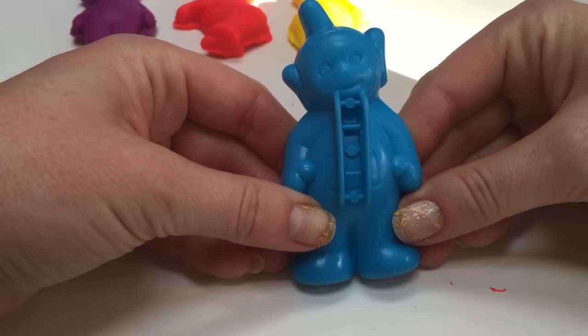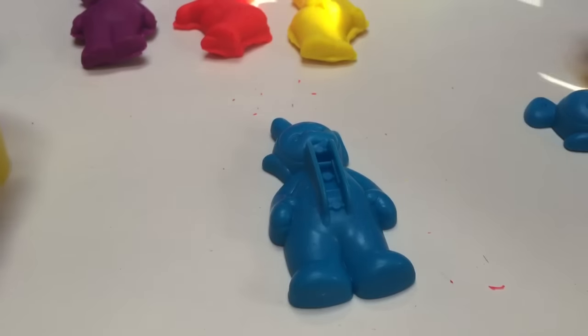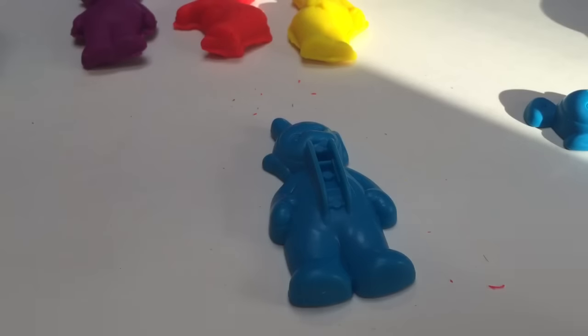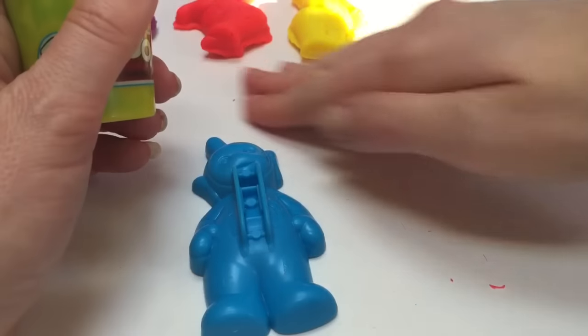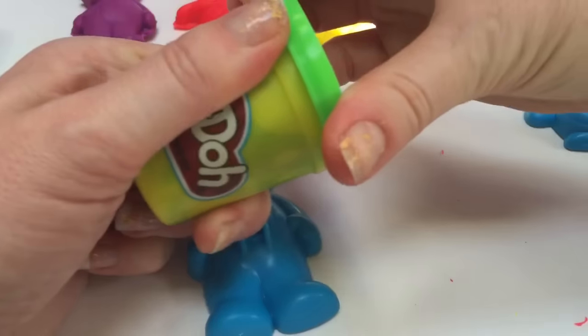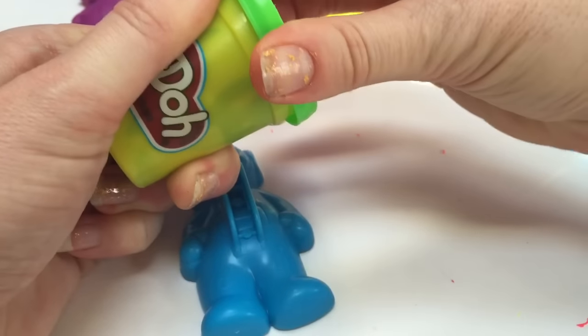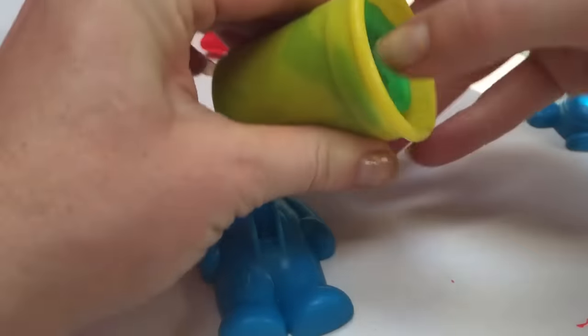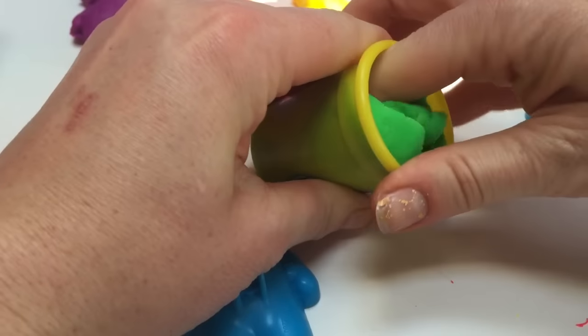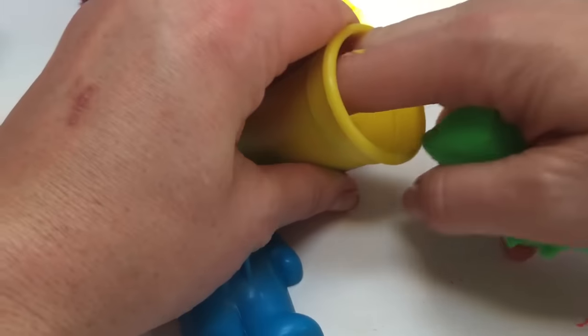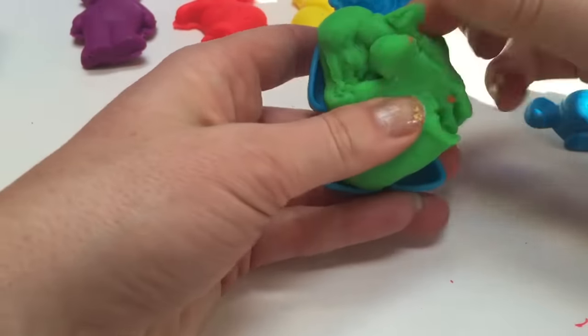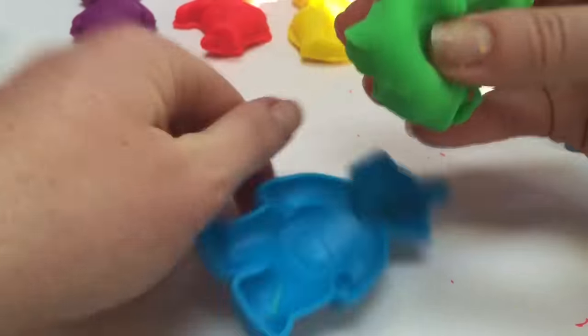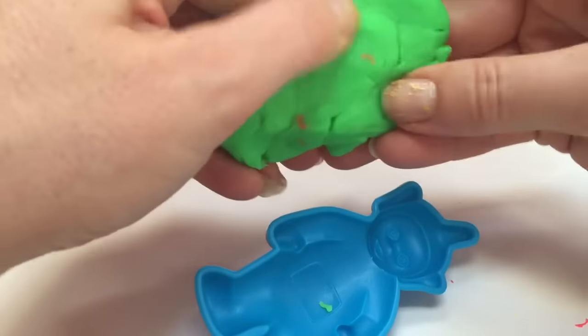And we have Dipsy! And what color is Dipsy? Dipsy is green. Green Play-Doh. Let's open up the green Play-Doh. You're the last one, Dipsy. Let's see how good we can do. Let's flatten our Play-Doh, make it nice and smooth. No cracks.